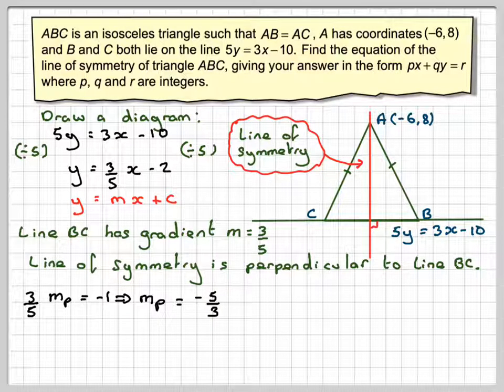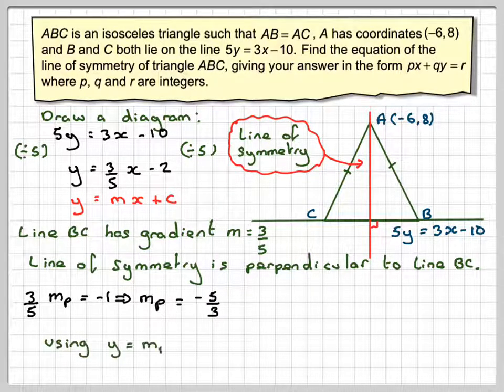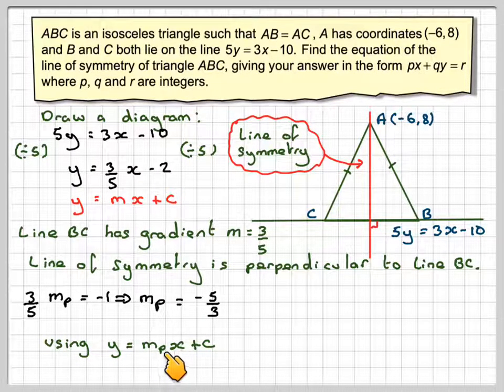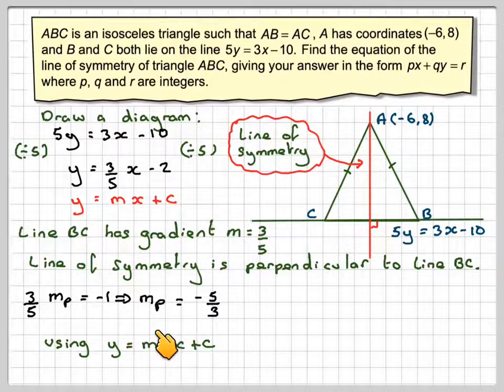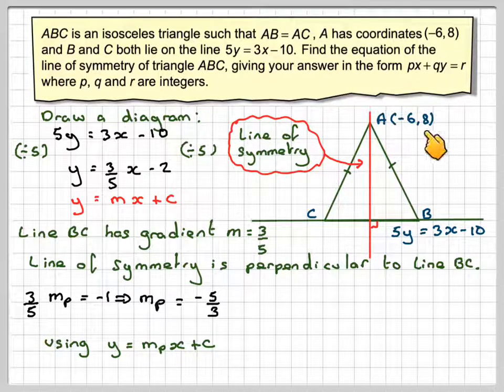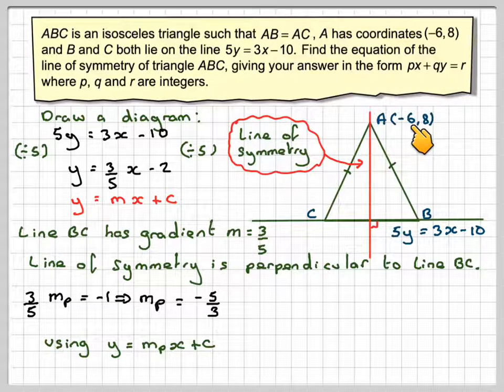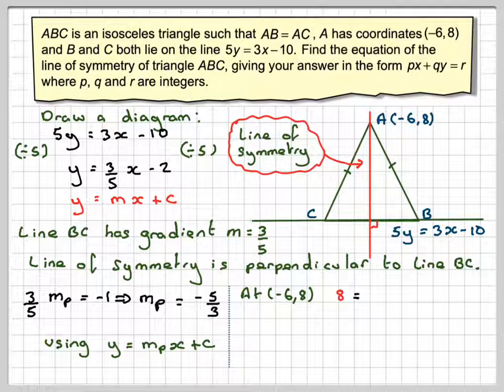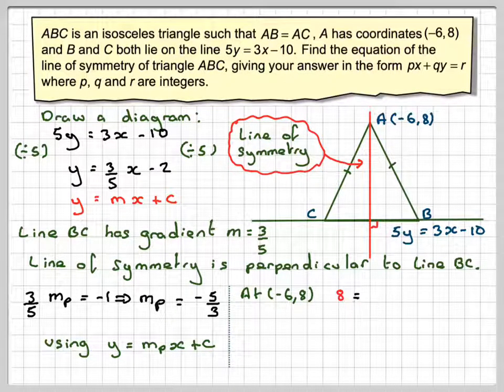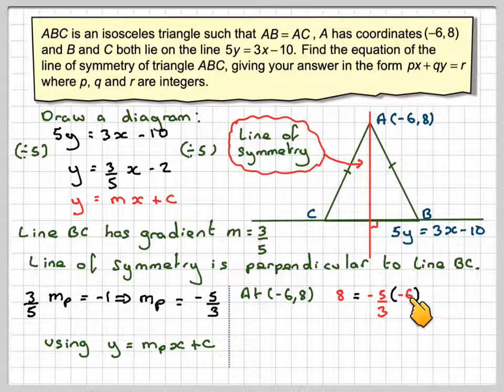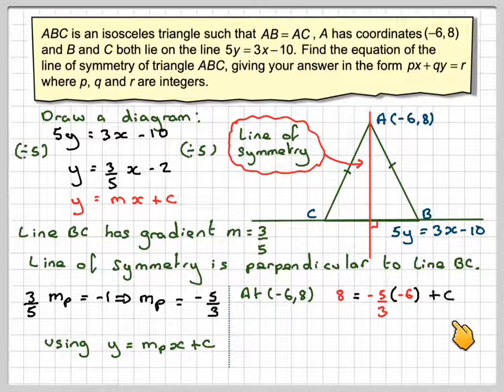Then we can use either Y = MX + C, or Y - Y1 = M(X - X1). I'm going to use Y = MX + C, where M is obviously this gradient. We know that when Y is 8, X is -6. So at (-6, 8), we will have that 8 = (-5/3)(-6) + C. This will allow me to find C.